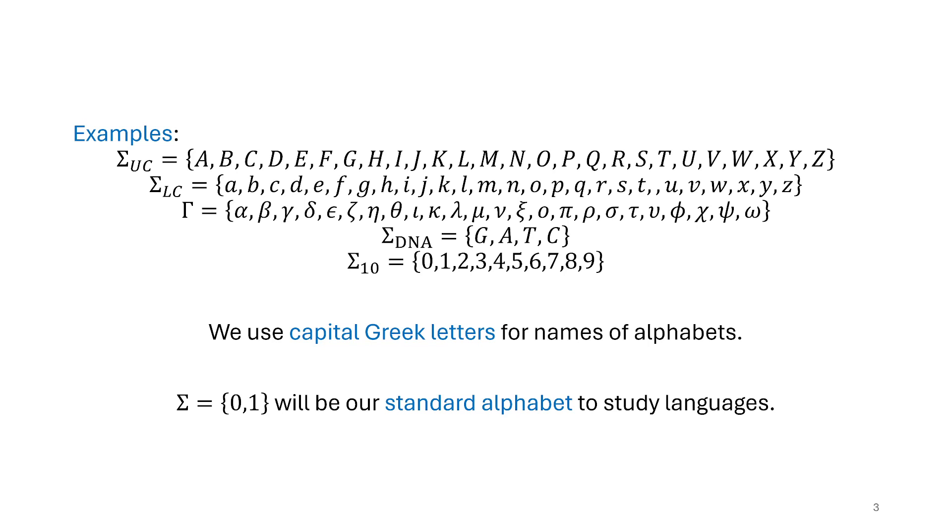The first two here I call sigma uppercase and sigma lowercase as the uppercase and lowercase letters that we're used to in the English language. And then I've also included, since I've been using sigma here, and then I will use gamma here as the set of the Greek letters, where the modern English alphabet originates from centuries ago.